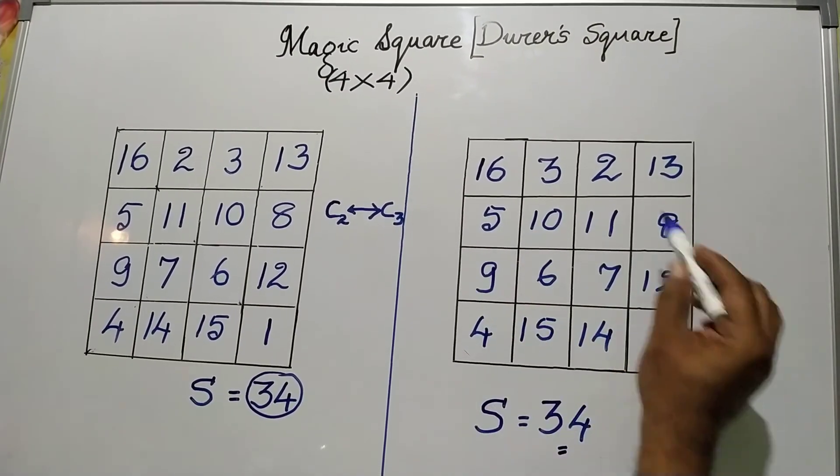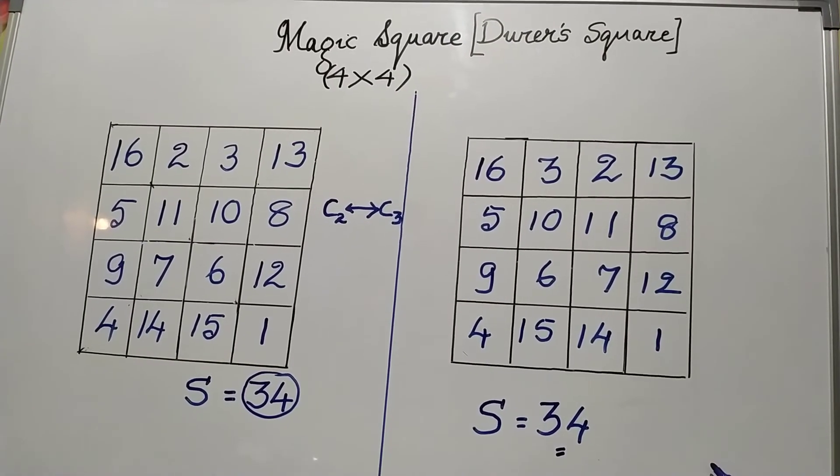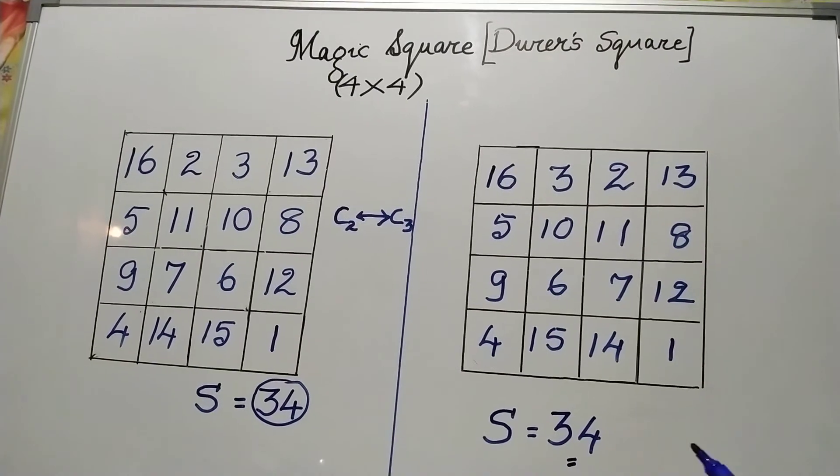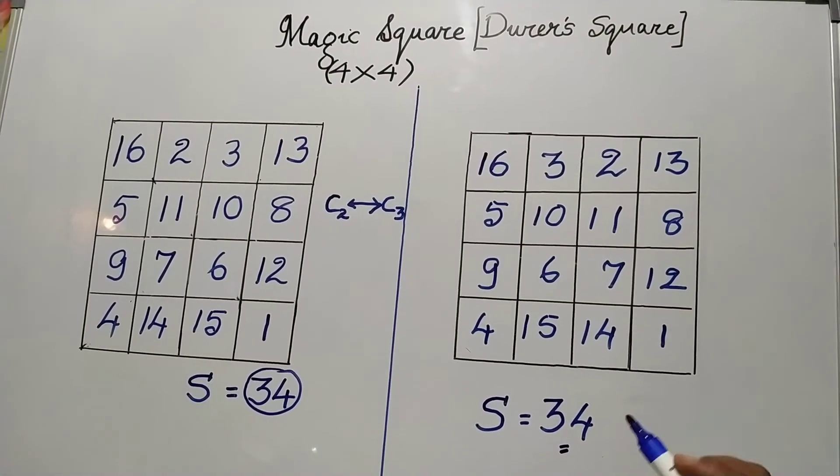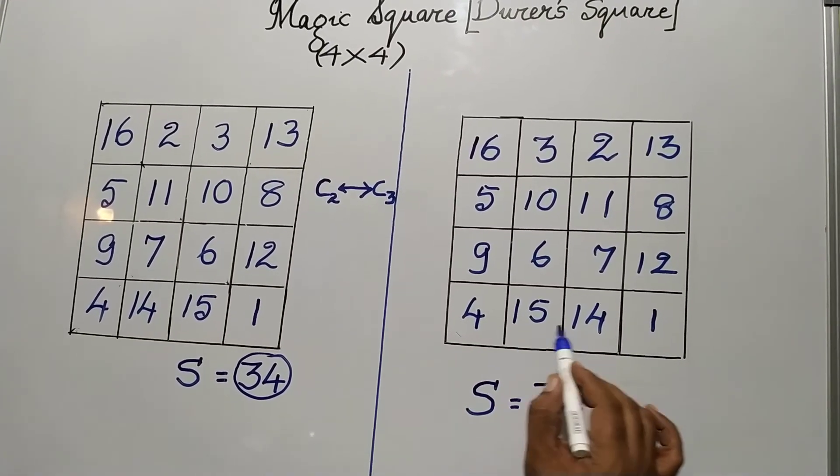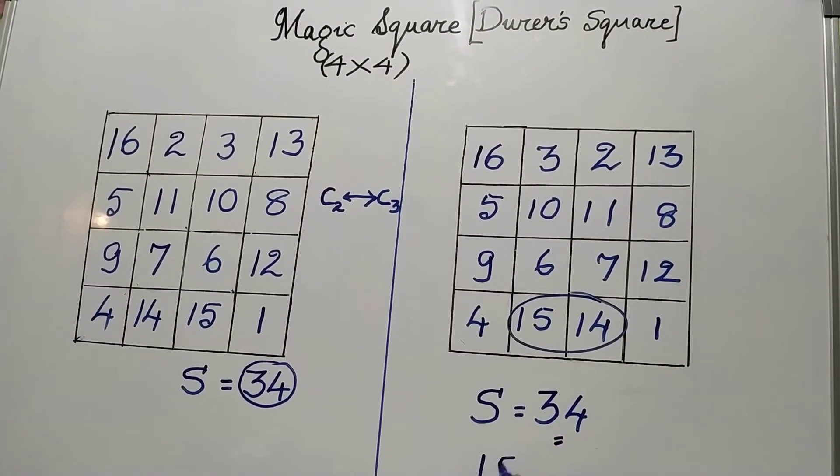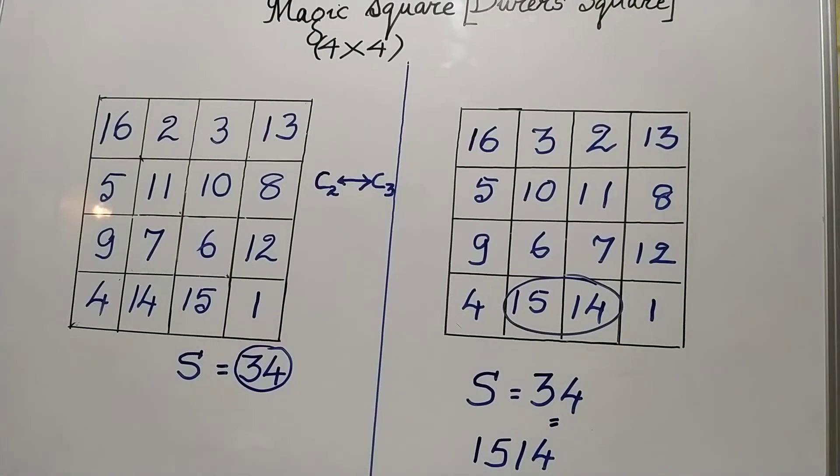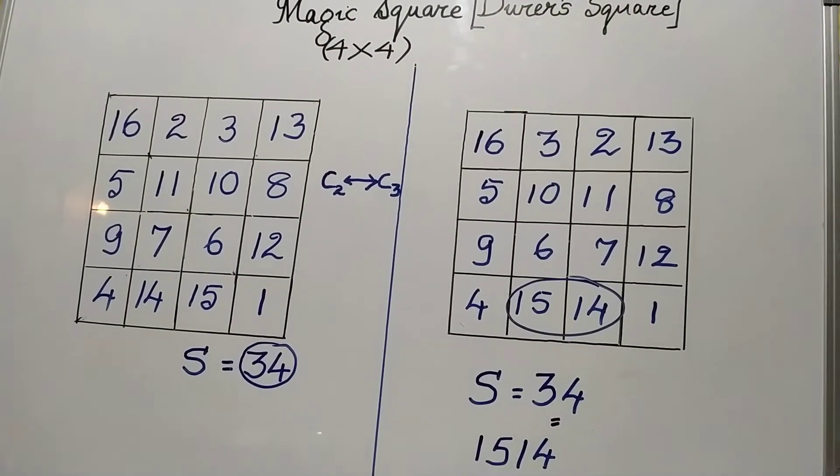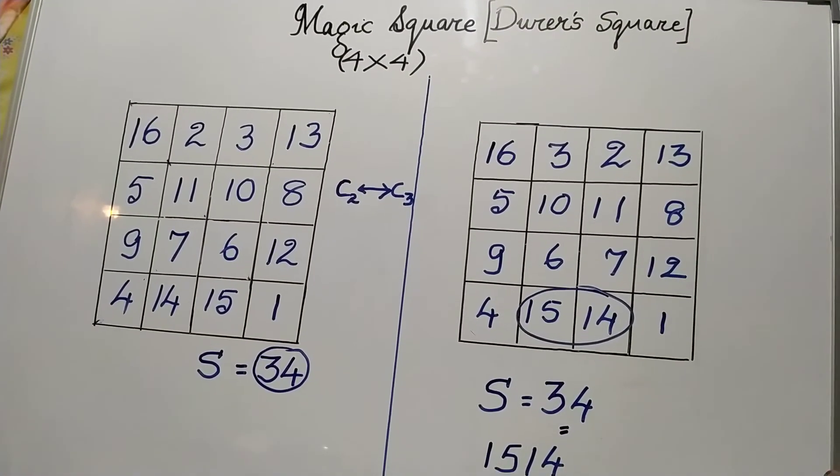You can, if you explore, find some other fascinating facts also. Please try to explore. Study the Dürer's square. And the most fascinating thing is in the last row at the central two grids, the number that is exhibited 1, 5, 1, 4. That is the year in which this magic square was engraved by Dürer.